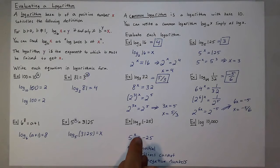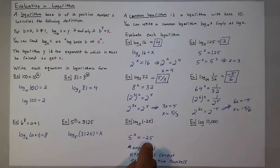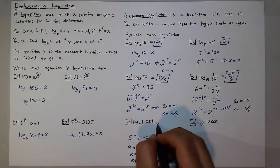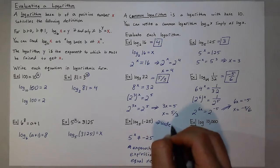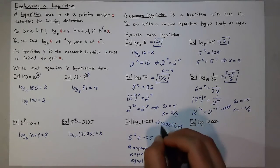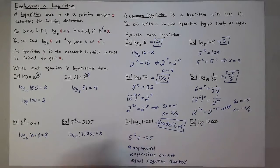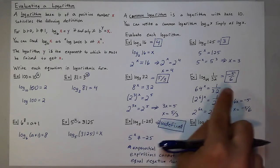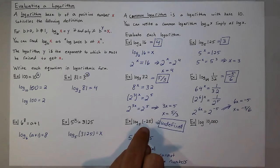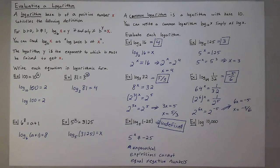So 5 to the x would never equal negative 25, meaning there is no such power that 5 can be raised to to equal negative 25. So this is undefined. Whenever you have a negative within a logarithm, this will always be the case. Now, logs can equal negative numbers, but you'll never find a negative within a logarithmic expression.